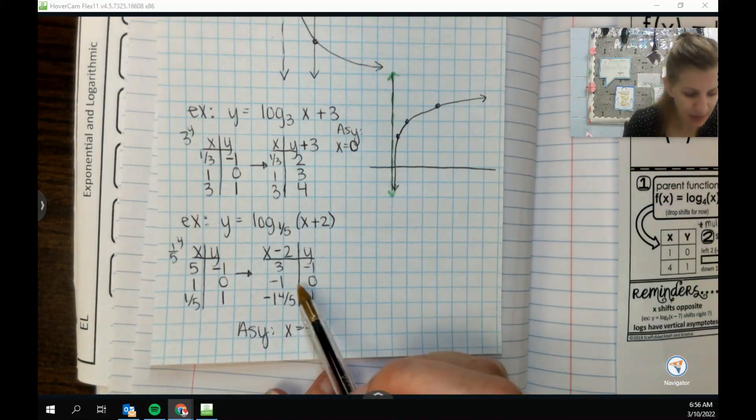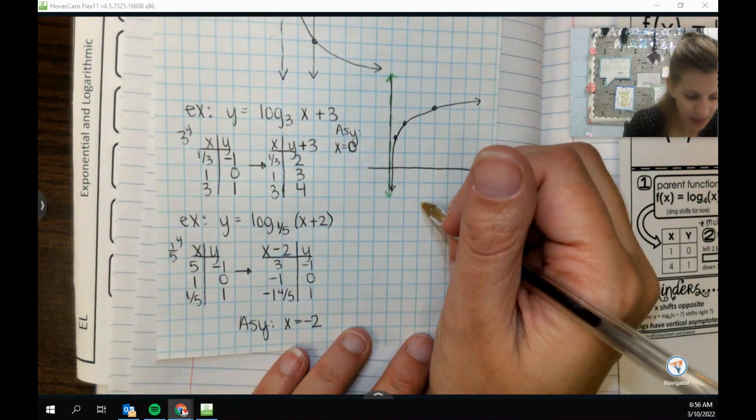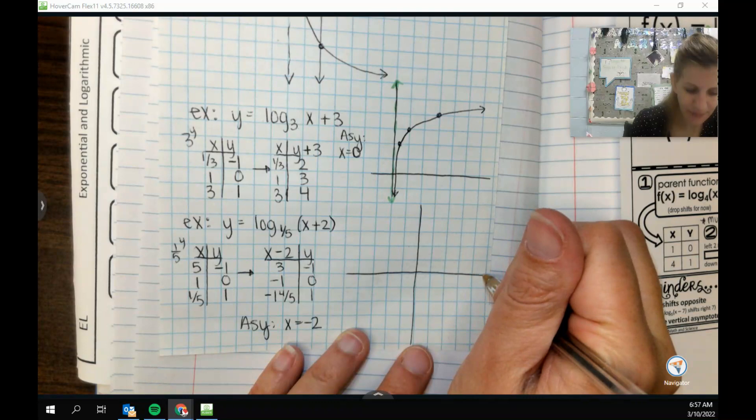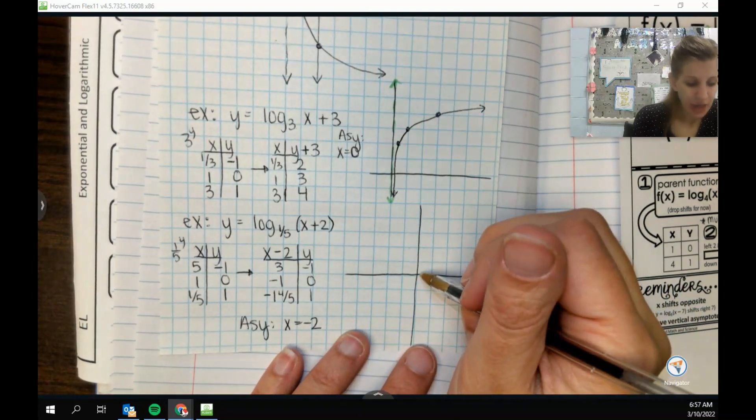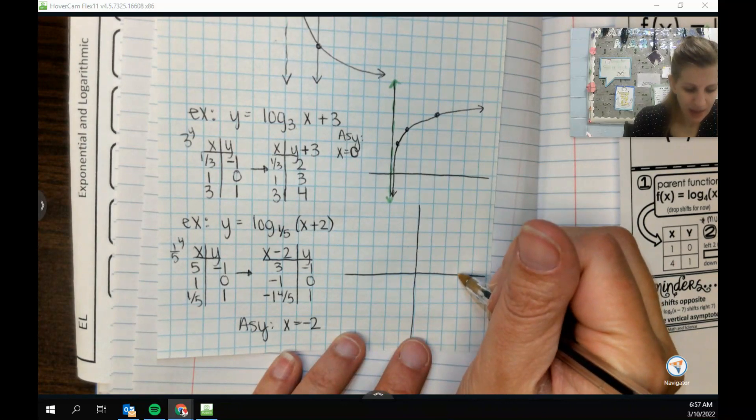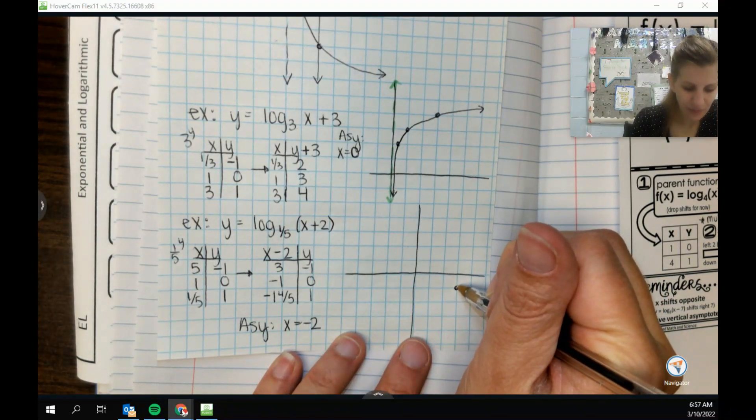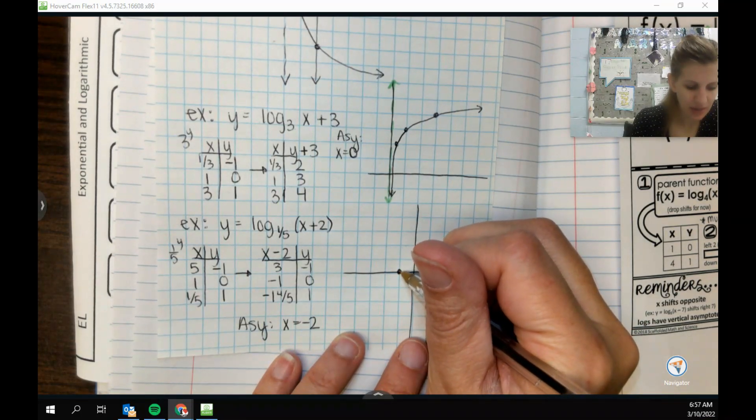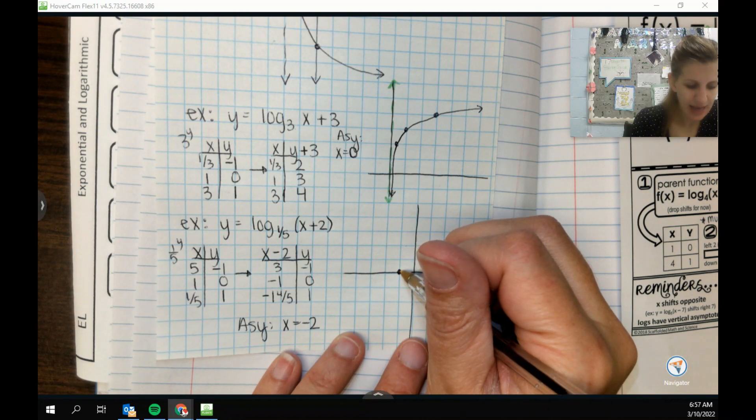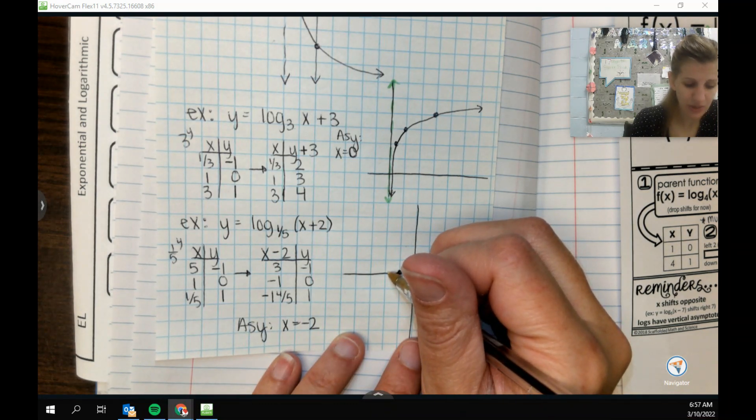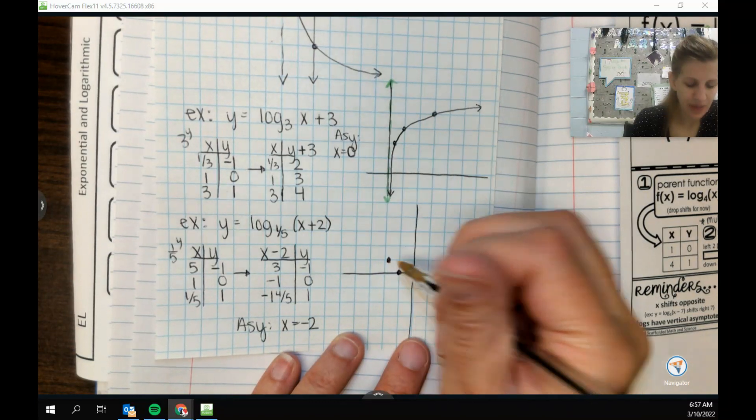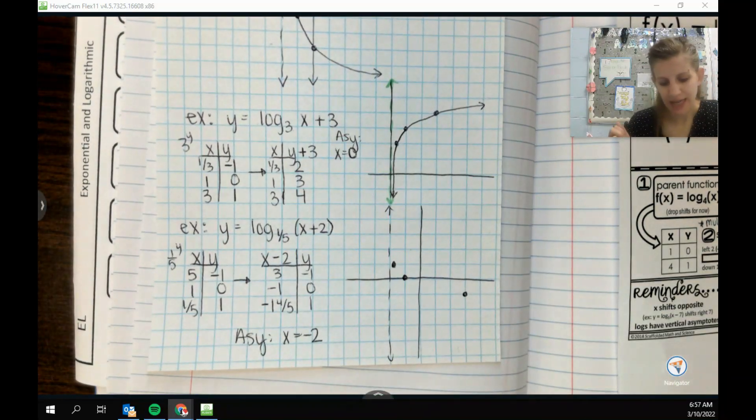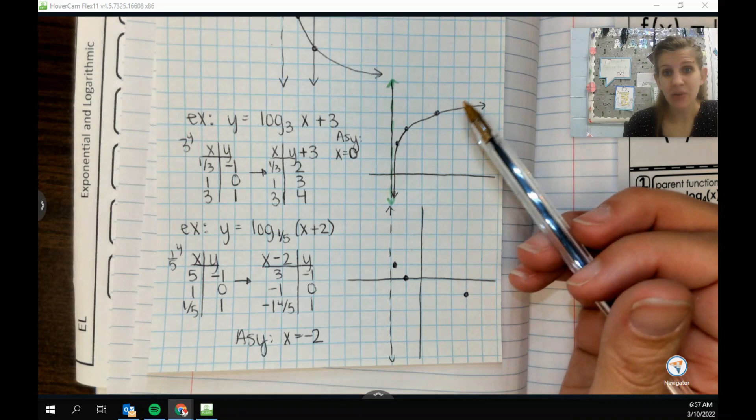And so now we can go graph. And let's see, we're in kind of negative and positive in both. So we'll kind of center our origin. Okay. So we're going to graph. We're going to plot 3, negative 1. Negative 1, 0. And then negative 1 and almost to 2, comma 1. Asymptote at negative 2. Okay. I can see. I can see. So it's like this one but flipped over. I can see how it's doing that but going the other direction.